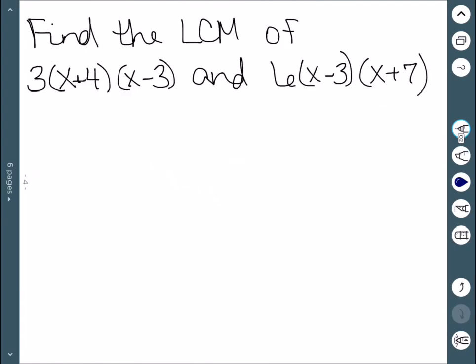Another example: if both expressions have a number out front, like here we have 3 and 6, we start by finding the least common multiple of those numbers, which is 6. In my first expression, I have x plus 4 and x minus 3. The second adds in x plus 7. We have no exponents here, so that's it.